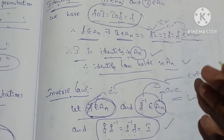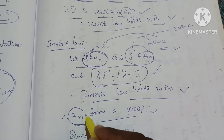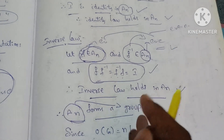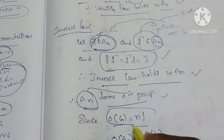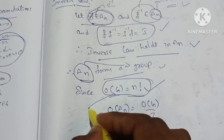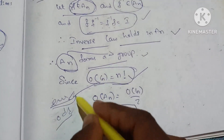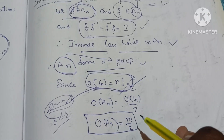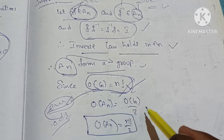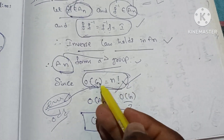All four laws — closure, associativity, identity, and inverse — hold, so Aₙ forms a group. The set of all even permutations forms a group. The order of the group Sₙ is n factorial, and since even and odd permutations each account for half, the order of Aₙ is n!/2.